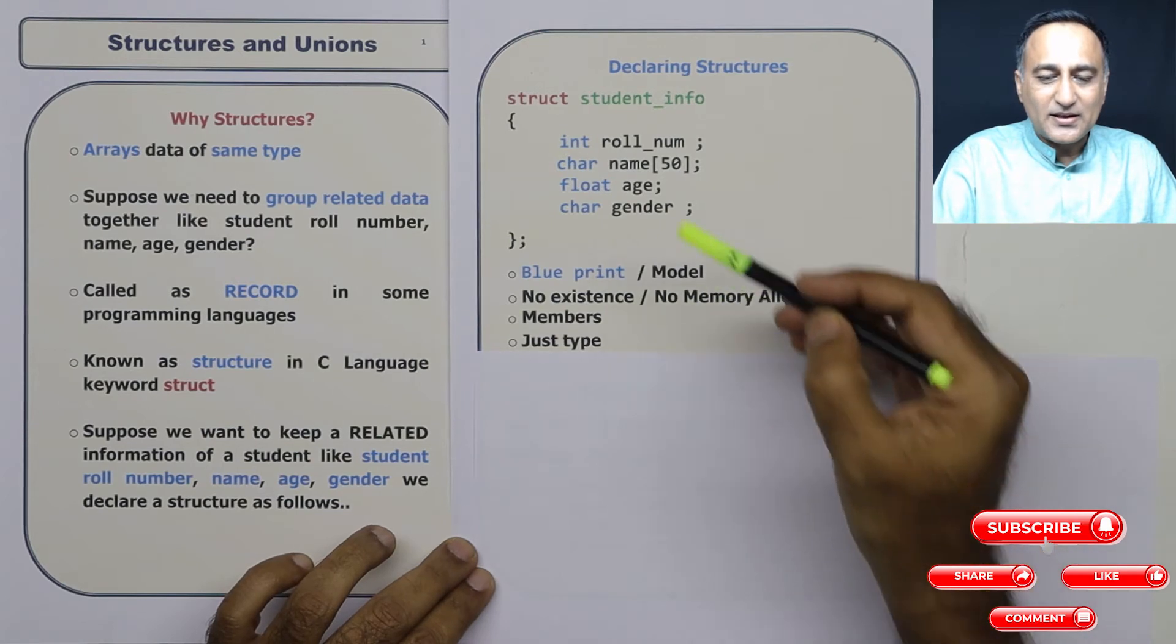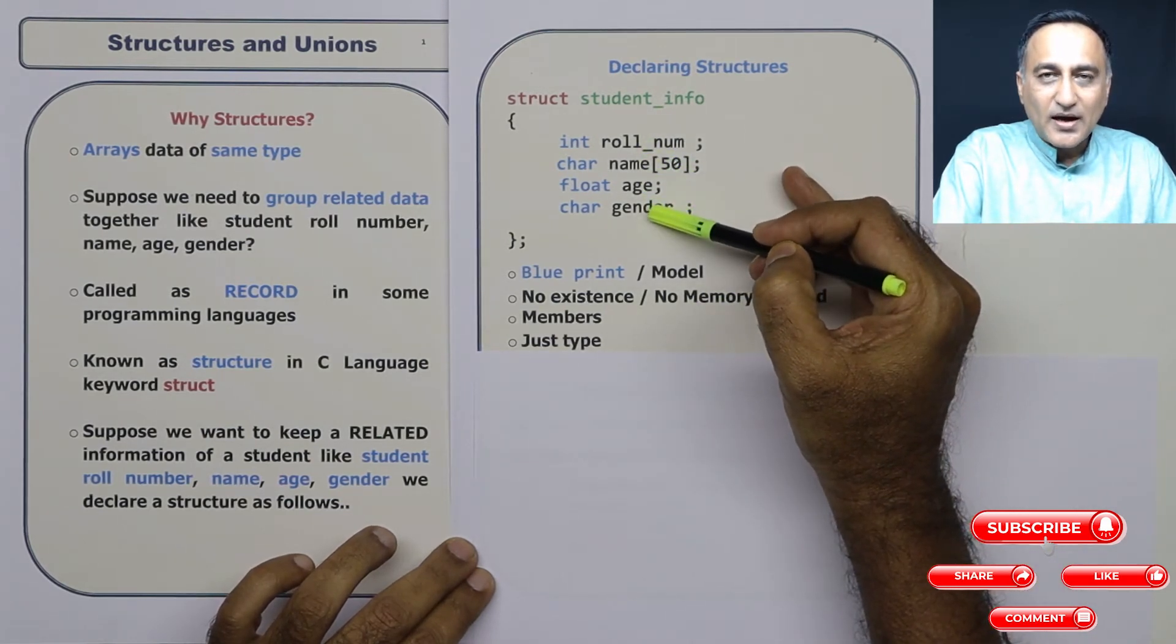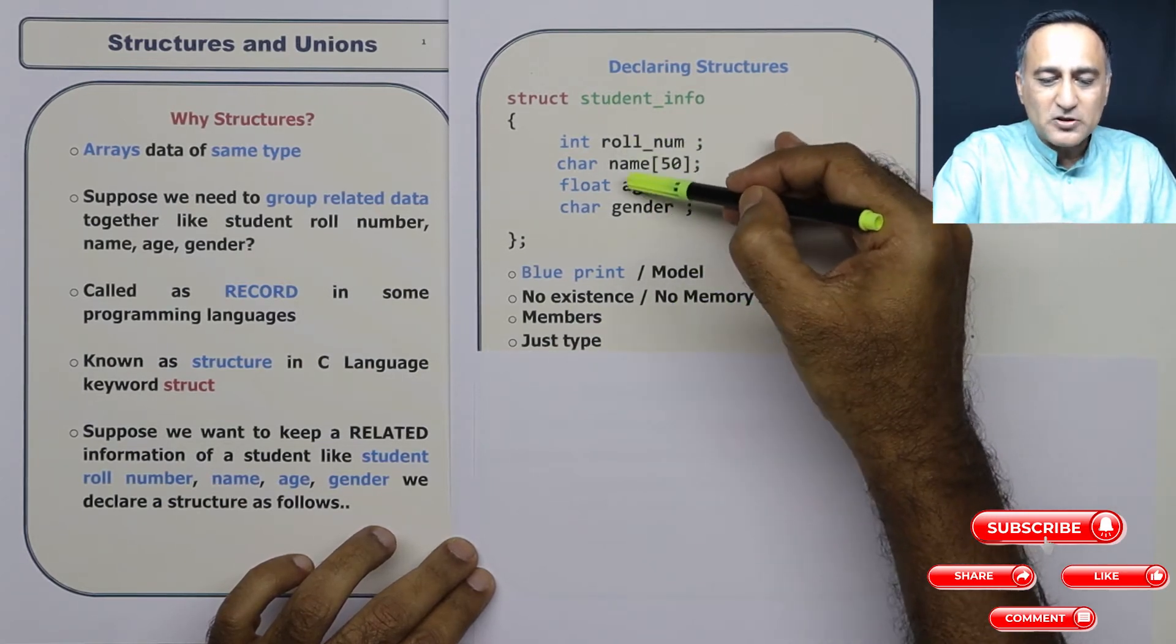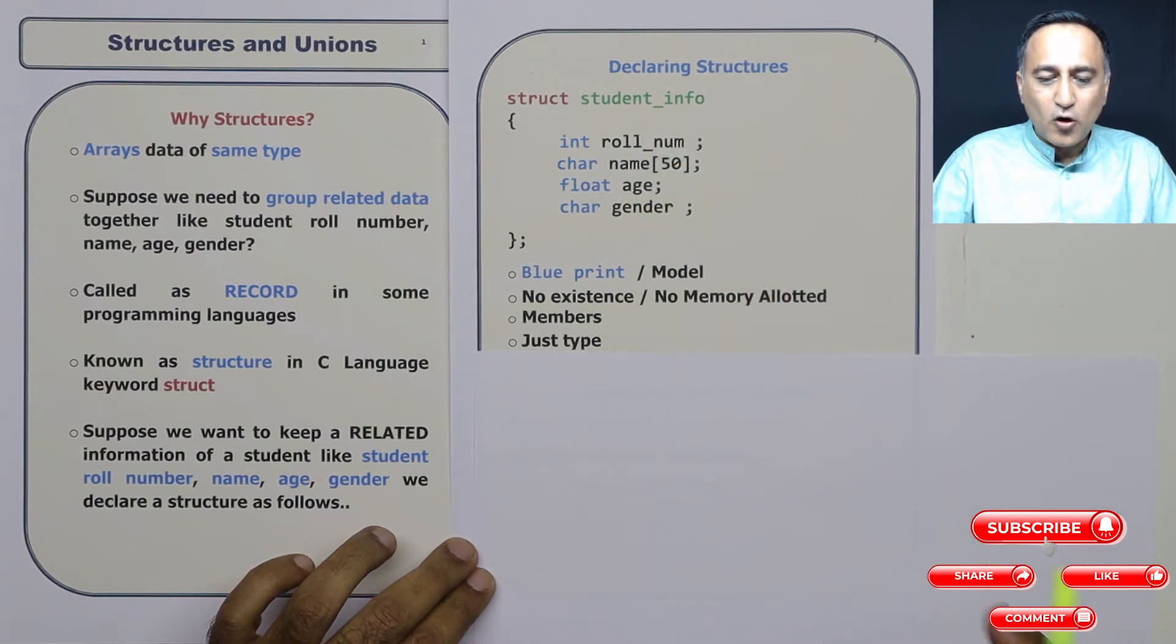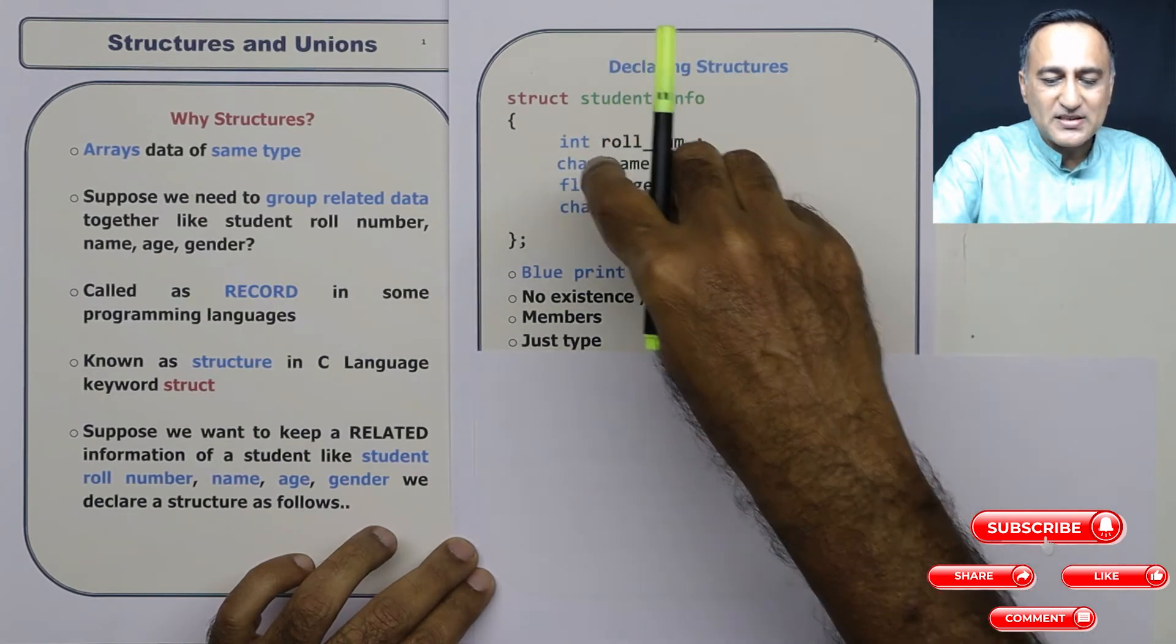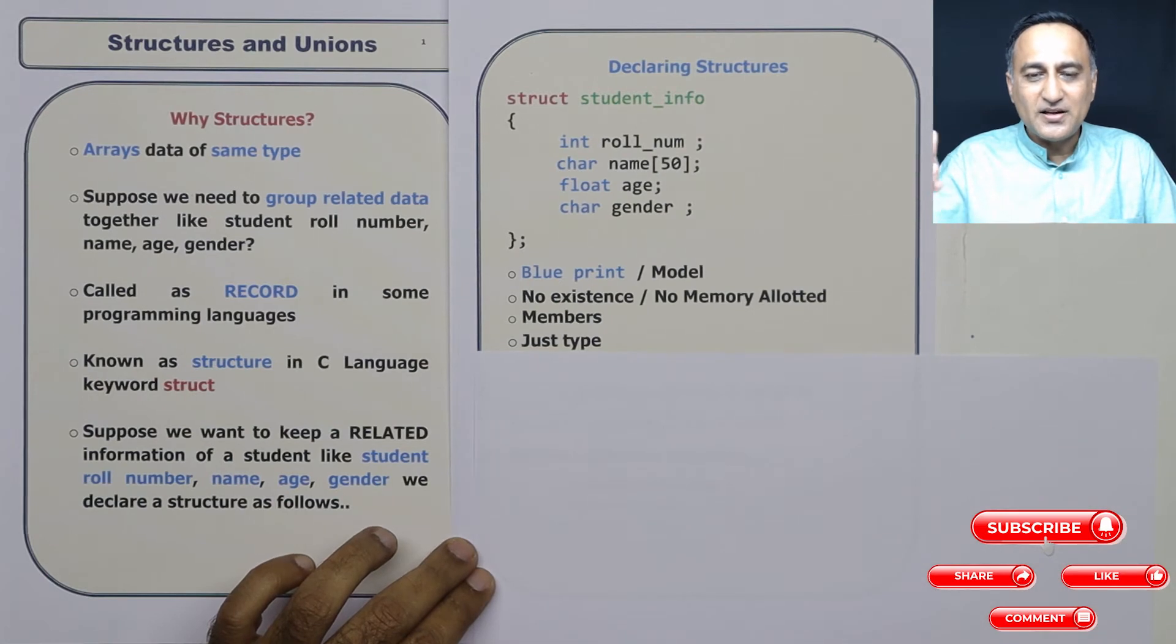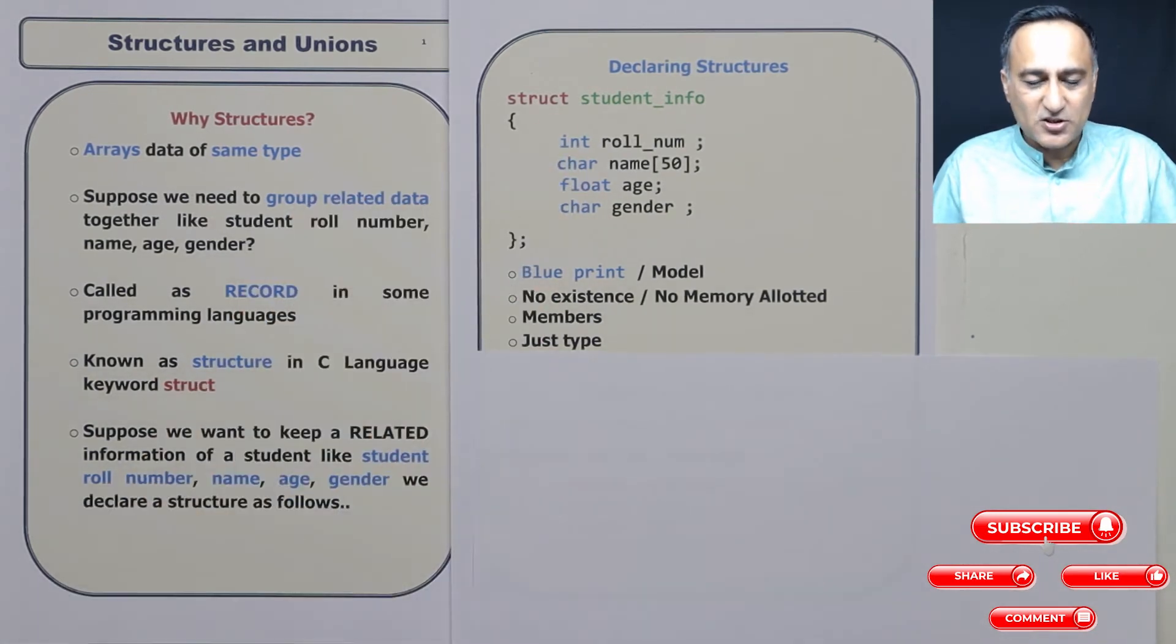Some technical terms, this role number, name, age and gender. In structures, they are known as members of a structure. So these are all members of a structure. All that you're doing here is you're just specifying the data type, you're saying role number is int, char is name of 50, age is float and gender is char. So this is how you go about declaring a structure.